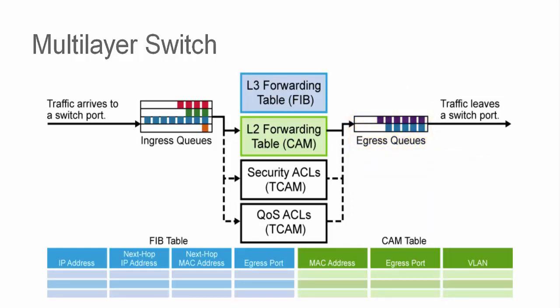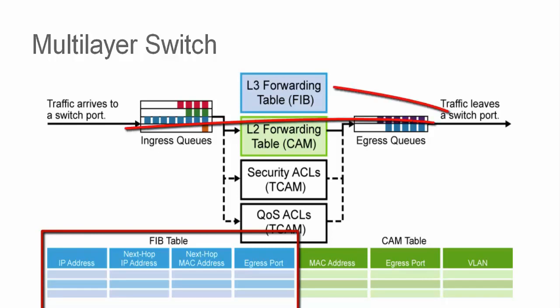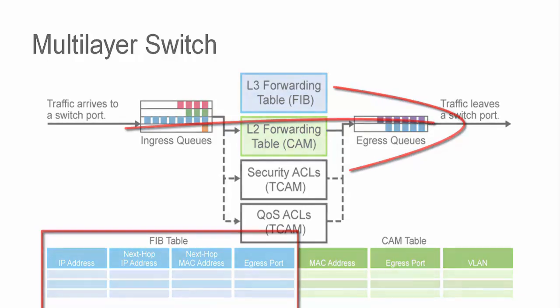The multi-layer switch is an efficient device at obtaining next-hop information from the forwarding information base, or FIB, and reading and rewriting the parts of the frame that change as necessary to reach the destination.